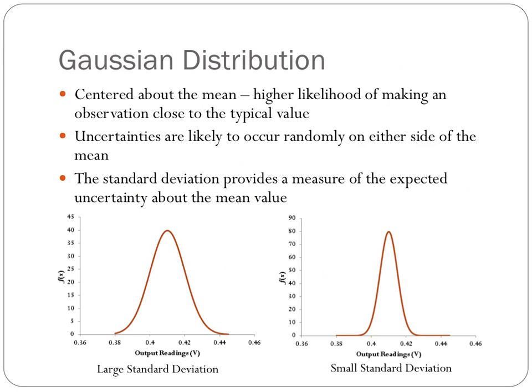The Gaussian distribution has a bell shape that is centered about the mean, which means there's a high likelihood of making an observation close to the mean value, and uncertainties are going to randomly occur on either side of the mean value. The standard deviation provides a measure of the expected uncertainty about the mean — in other words, it tells us about the width of the curve about the mean value. When we have a large standard deviation, the curve is wide; when we have a small standard deviation, the curve is very narrow about the mean.